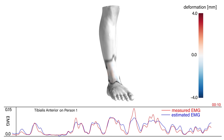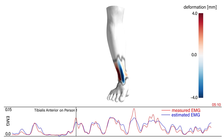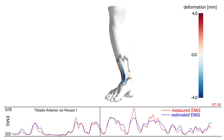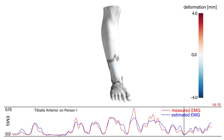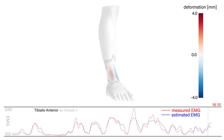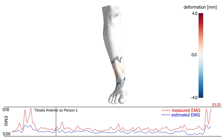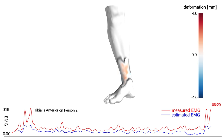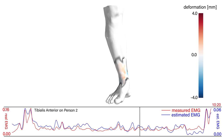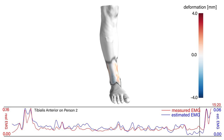From the 3D surface deformations, we learn a model to estimate the muscular activity. Here we show the measured EMG from the muscle tibialis anterior in comparison to the EMG as estimated by our model. Our model can also be applied to different persons. Only the absolute value of the EMG cannot be precisely predicted. Putting both curves on top of each other, we can see that the quality of the signal is reproduced well by our model.